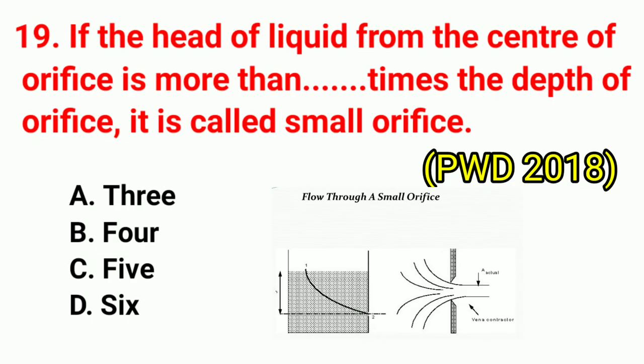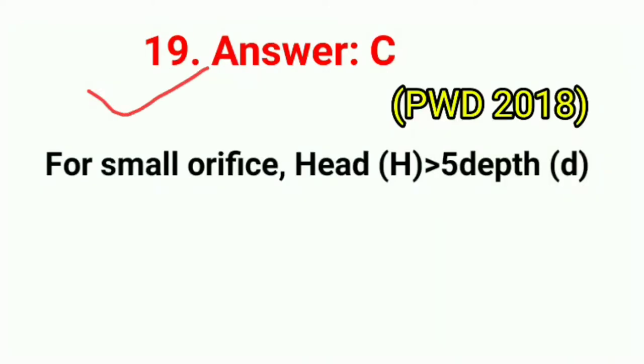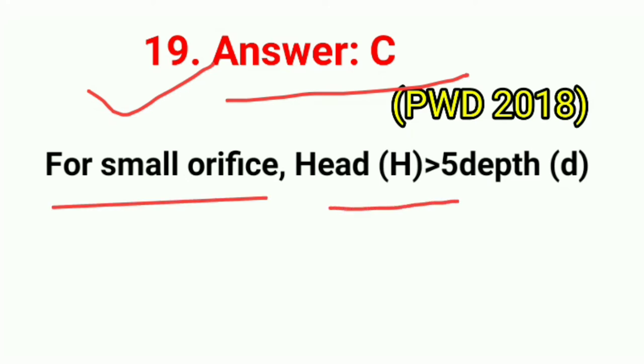Question No. 19. If the head of liquid from the centre of orifice is more than how many times the depth of orifice, it is called a small orifice? Correct answer is option C: 5 times. For a small orifice, head must be greater than 5 times the depth.